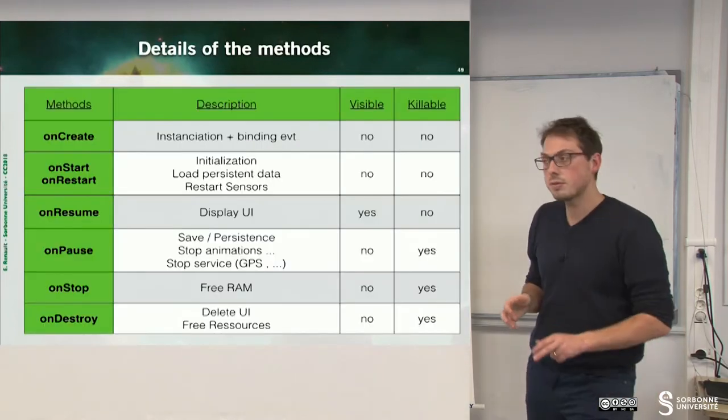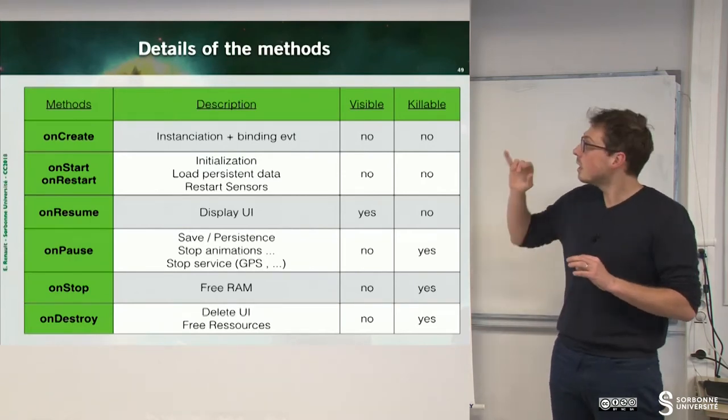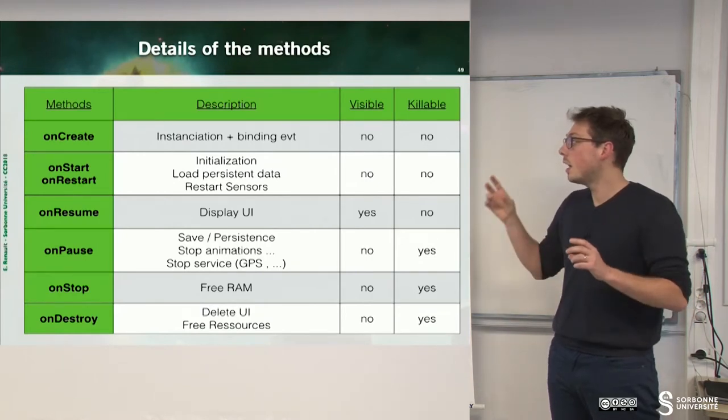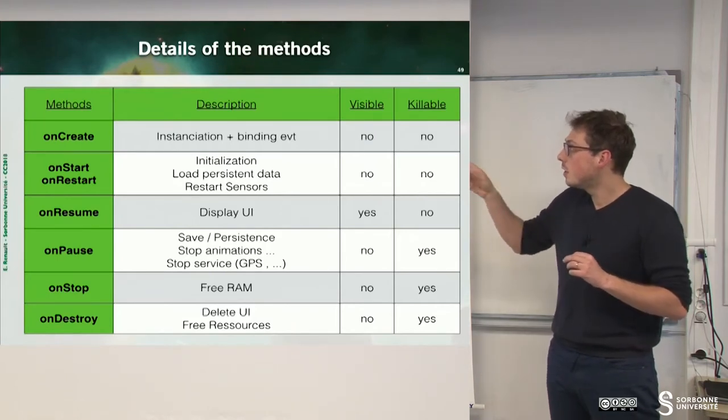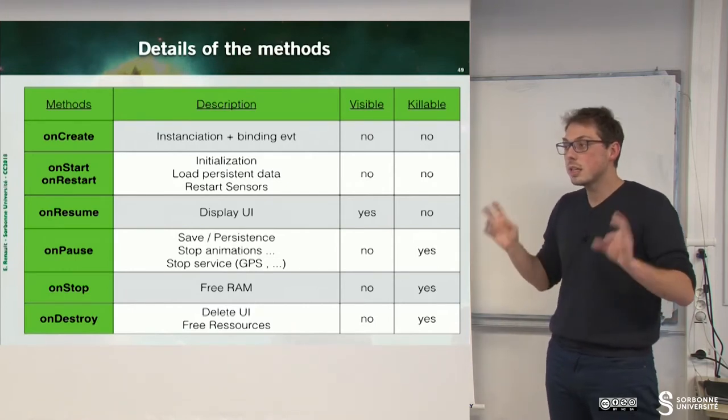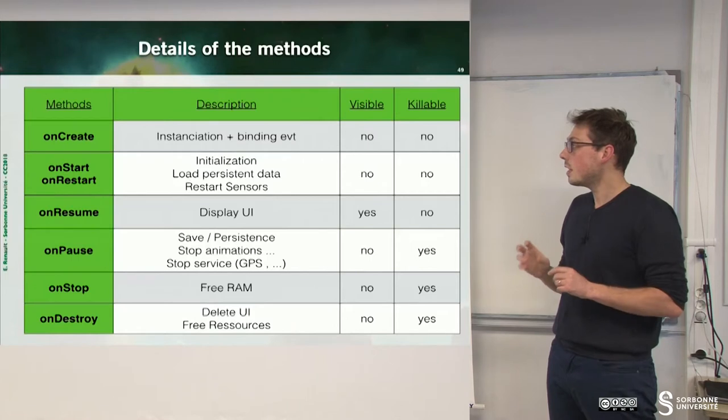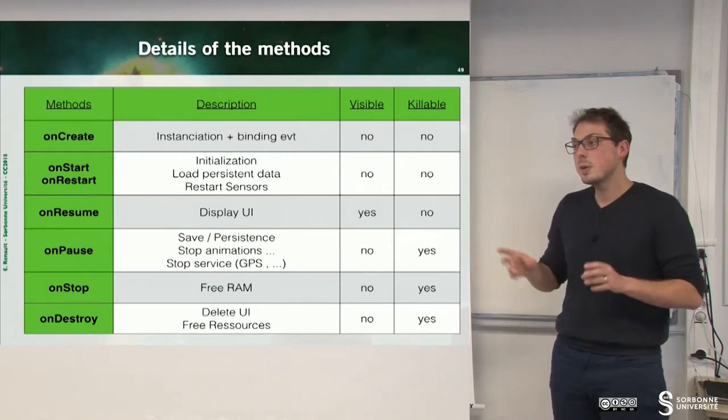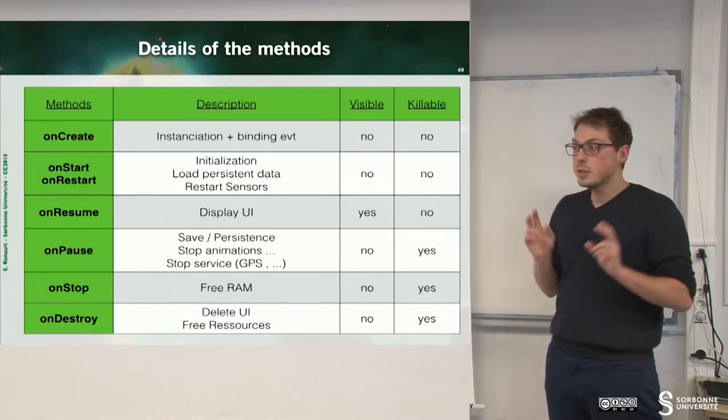There are a lot of things you have to do when you have this method. On the onCreate method, you have to instantiate your GUI and to bind events. We can see that, at this time, the GUI is not visible, is not killable. You cannot kill this application when it's in the onCreate method. Then, there is the onStart, onRestart. This is where you will initialize your value, load persistent data, and restart sensor.